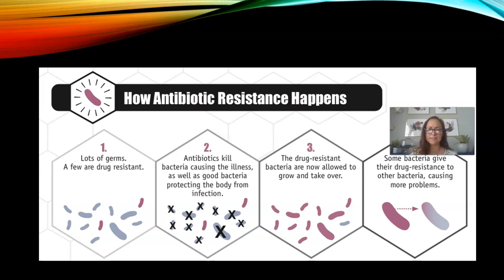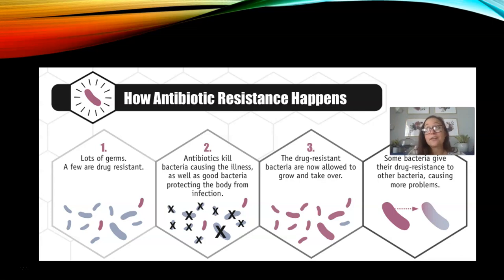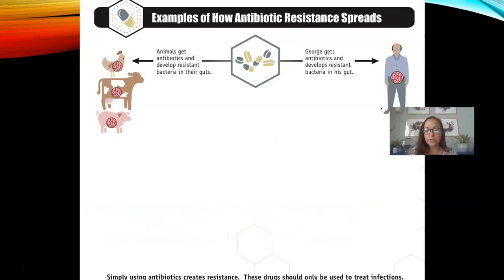A few bacteria are resistant to antibiotics. The antibiotics kill the bacteria causing the illness as well as the good bacteria that protect us. The drug-resistant bacteria are then allowed to grow and take over. Some bacteria can even give their drug resistance to other bacteria — for AP Biology students, this occurs through the process of conjugation, or through transformation if the resistant bacteria dies and nearby bacteria take up those resistance genes.